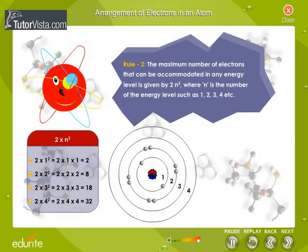Rule 2: The maximum number of electrons that can be accommodated in any energy level is given by 2n², where n is the number of the energy level, such as 1, 2, 3, 4, etc.